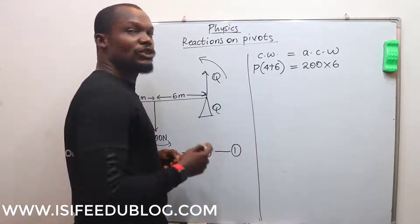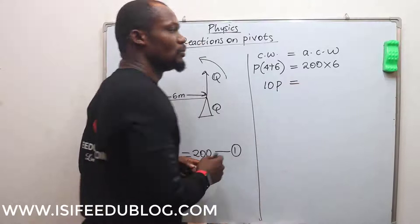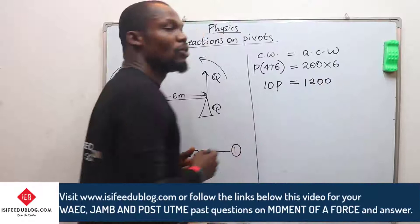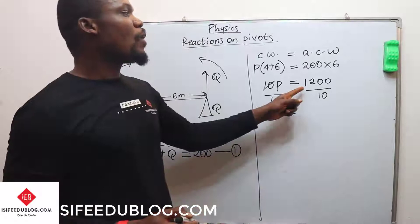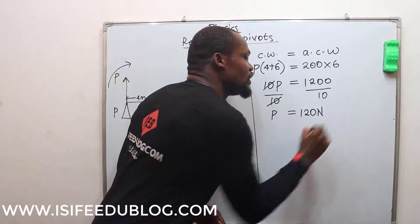200 times 6 gives us 1200. To find P, we divide both sides by 10. We cancel 10, and P equals 1200 divided by 10, which gives us 120 newtons.